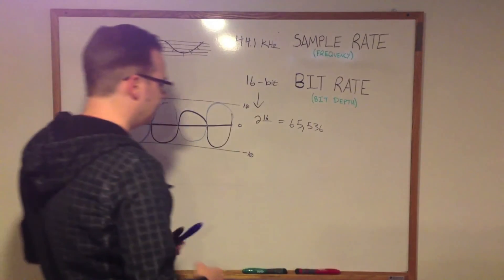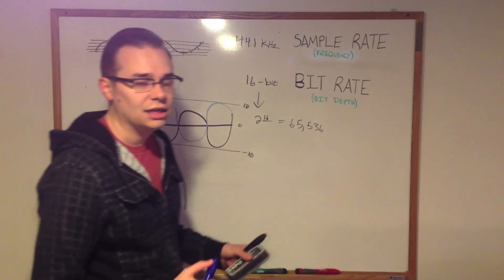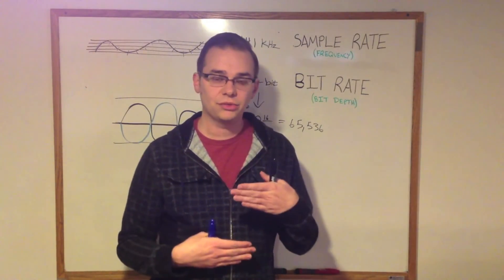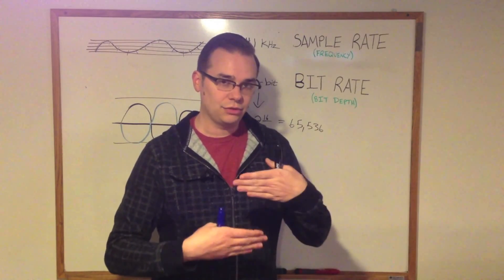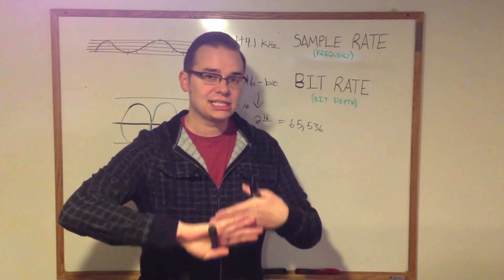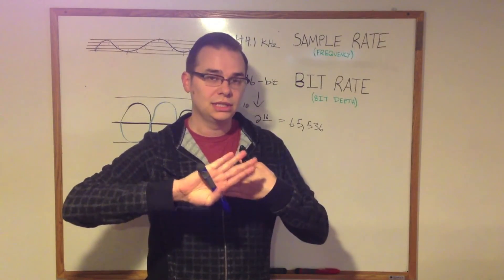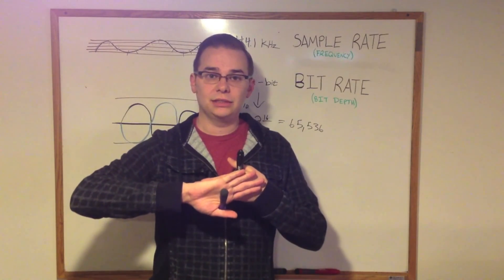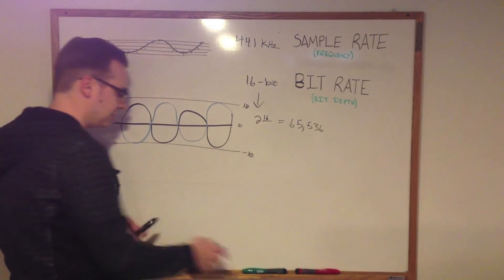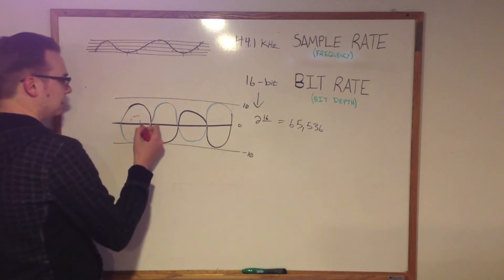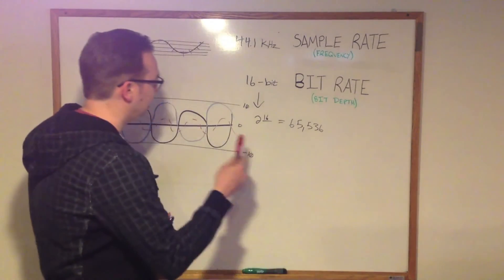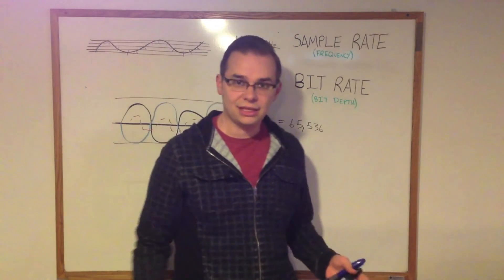Now, if instead of that wave file you take a 320 kilobit MP3, and you overlay the inverted 320 over that wave file, then what you end up with instead of silence is the difference between the two. Assuming they're both playing in the exact proper time, perfectly lined up, instead of getting silence you'll get whatever those differences were — those digital artifacts, the stuff that was removed will come out, and that's the only thing you will hear. It's a pretty cool trick that I'm going to demonstrate now.